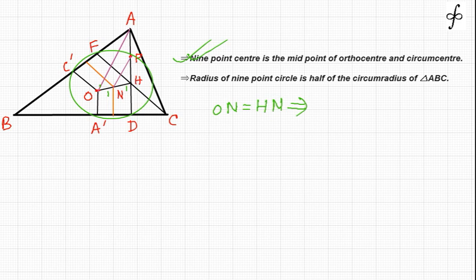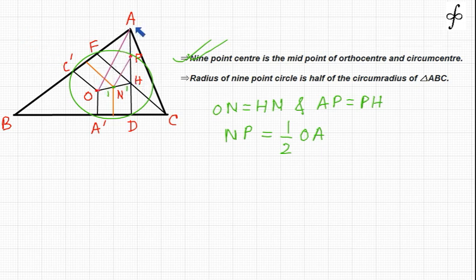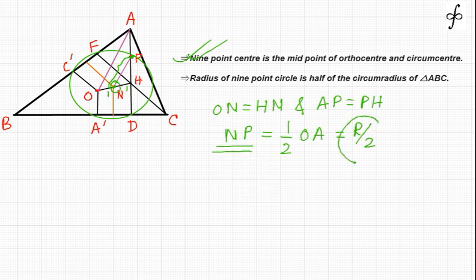We can also say that N is the midpoint of OH and P is the midpoint of AH, so NP must equal half of OA. OA is nothing but the circumradius R of triangle ABC. Therefore NP equals R over 2. Since N is the nine-point center and P is a point on the nine-point circle, NP is the radius of the nine-point circle. So the radius of the nine-point circle is half the circumradius of triangle ABC.